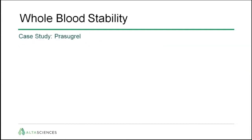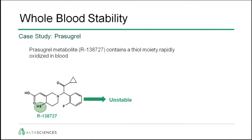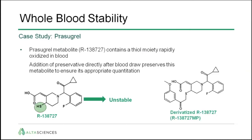Then, whole blood stability. The case study here is Prasugrel. The Prasugrel metabolite contains a thiol moiety that is rapidly oxidized in blood, which leads to its instability in whole blood. Therefore, you have to add a preservative directly after the blood draw to preserve this metabolite and ensure its appropriate quantitation. Here is the structure of the derivatized metabolite obtained after the addition of the preservative.